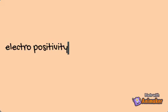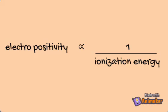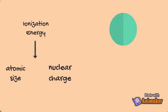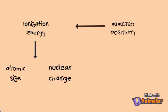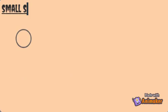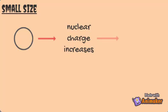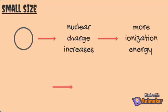The relation between Electropositivity and ionization energy is inverse — less ionization energy means more Electropositive. Ionization energy depends upon atomic size and nuclear charge, and Electropositivity depends upon ionization energy. For example, if we have a small sized atom, the hold of nucleus over valence electrons is high. More energy is required to remove the outermost electron, thus the atom will be less Electropositive.